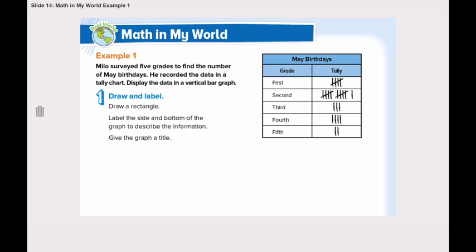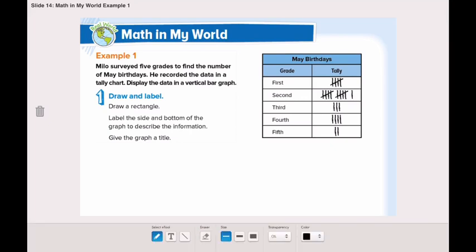Now open page 703 and let's go through example number 1 together. Milo surveyed 5 grades to find the number of May birthdays. He recorded the data in a tally chart and displayed the data in a vertical bar graph. The vertical bar graph is the one that looks like a tower. Now let's take a look at the tally chart.